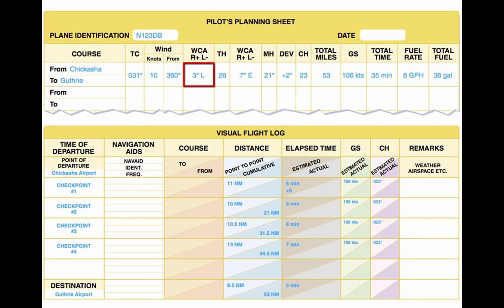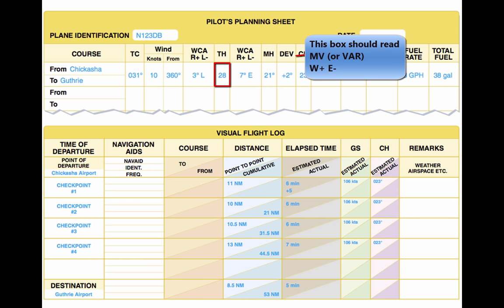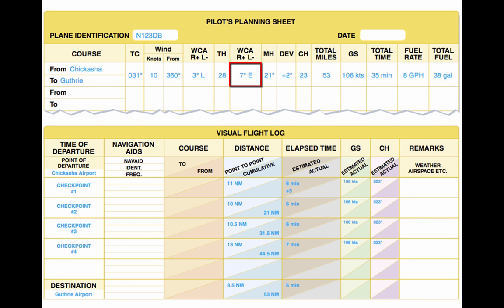Next, the pilot should locate the isogonic line closest to the route of flight to determine variation. The sectional chart shows the variation to be 6.30 degrees east, rounded to 7 degrees east, which means it should be subtracted from the TH, giving an MH of 21 degrees. Next, add 2 degrees to the MH for the deviation correction. This gives the pilot the compass heading of 23 degrees.